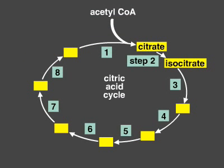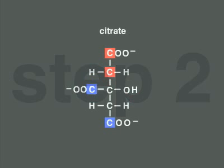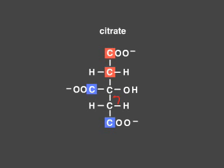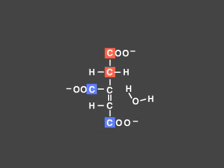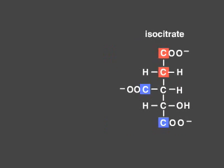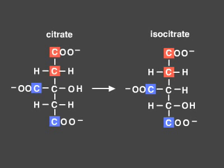In the next step of the cycle, citrate rearranges to form isocitrate. Note that the hydroxyl group is in a different position in these two molecules.